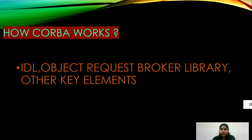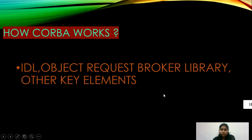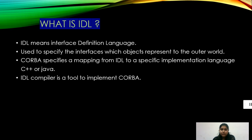Next we will see how CORBA works, including IDL and other key elements. IDL stands for Interface Definition Language. It is used to specify the interfaces which objects present to the outer world. CORBA specifies a mapping from IDL to a specific implementation language like C++ or Java. The IDL compiler is a tool used to implement CORBA.